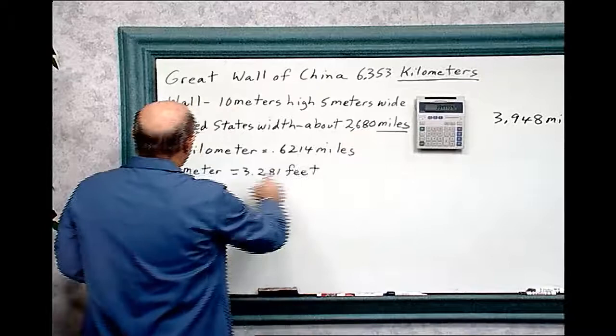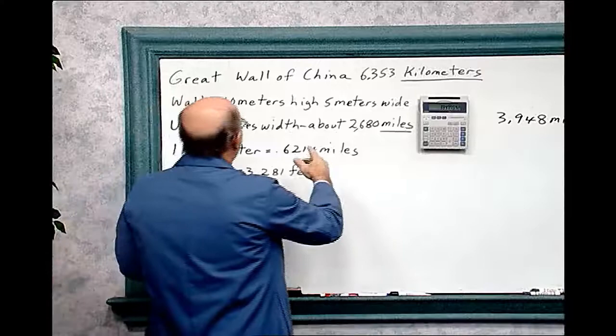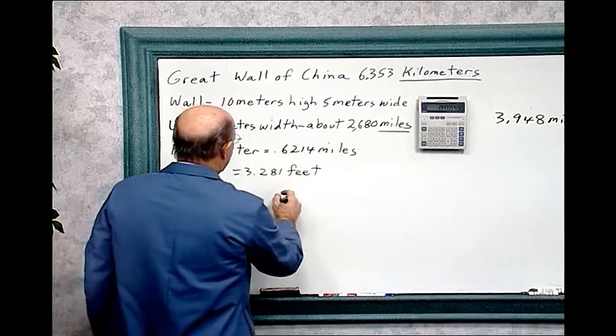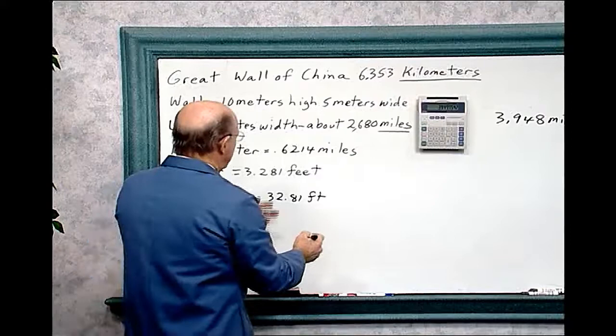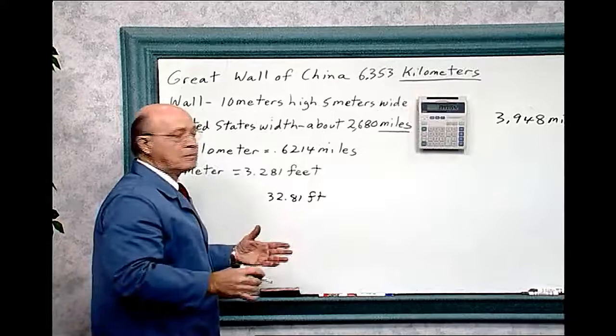And again, one meter equals 3.281 feet. So we have to convert that. And that would be easy to do. The 10 we just multiply would be 32.81 feet. When you multiply by 10, all you have to do is take the decimal point and bring it over one. And so that would be the height of the wall - it's about a little over 30 feet.